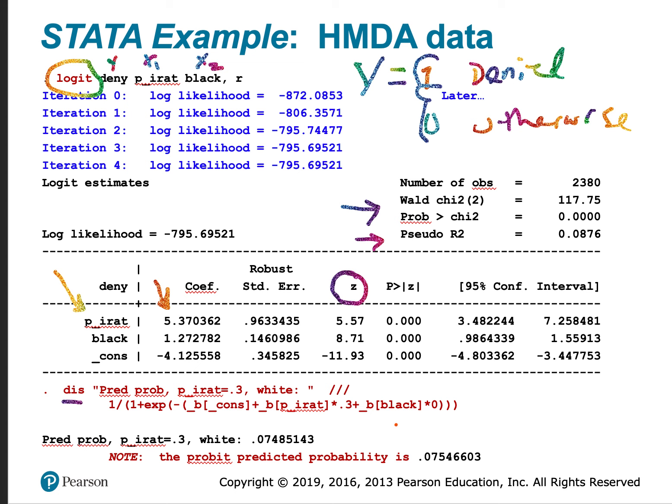So we've plugged in the value of 0.3 for the payment to income ratio. And the coefficient on black times 0, because we're looking at the predicted probability for a white applicant given that they have a payment to income ratio of 0.3, using the display's calculating function. And we calculate a probability of 0.07485143. So the logit predicted probability is about 7.48%.